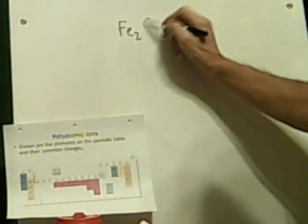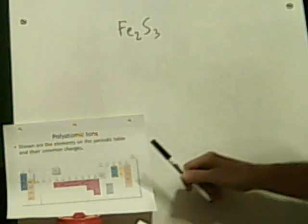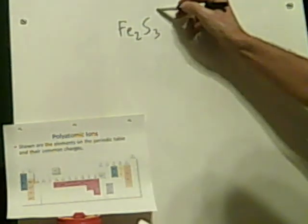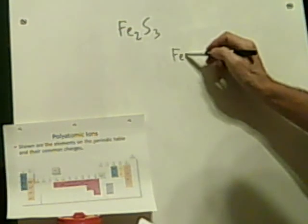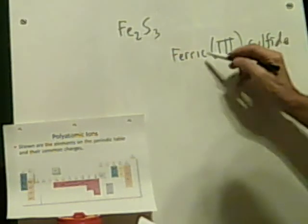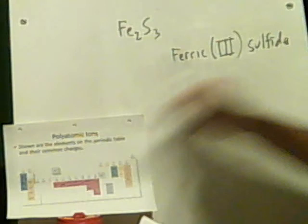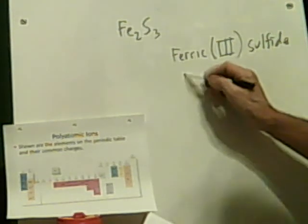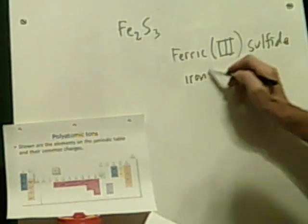Fe2S3 — this is iron and sulfur. Sulfur is negative 2, so there's a negative 6 total, meaning iron has a charge state of 3. So I'm going to say this is ferric sulfide. Looking at the answer: there are two possible answers — iron(III) sulfide, or ferric sulfide. They accepted both. That gives you an example that there isn't always just one correct answer.